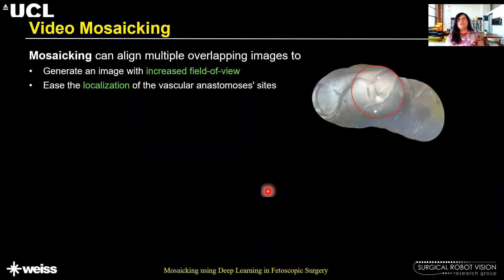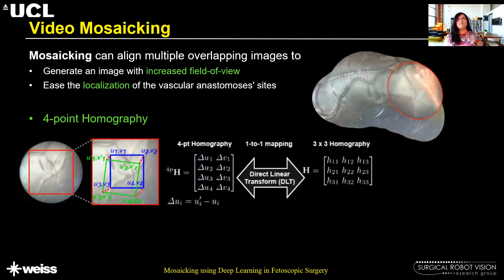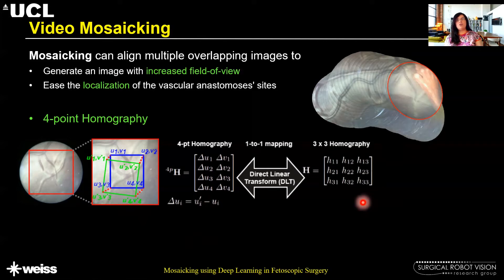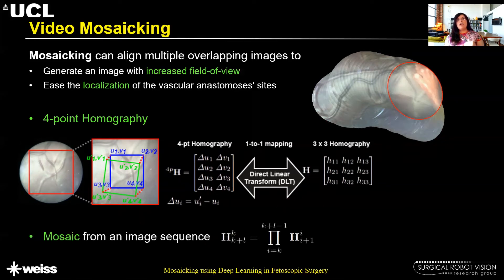In our work we use the four-point homography estimation. The four-point homography representation uses four points which are basically the displacement of the four corners of the patch pair used for training our network. Four-point homography is related to the 3x3 homography and a one-to-one mapping exists between them by applying a direct linear transformation. Mosaicing from an image sequence is generated by computing pairwise homographies between consecutive frames and then computing relative homographies with respect to a reference frame.